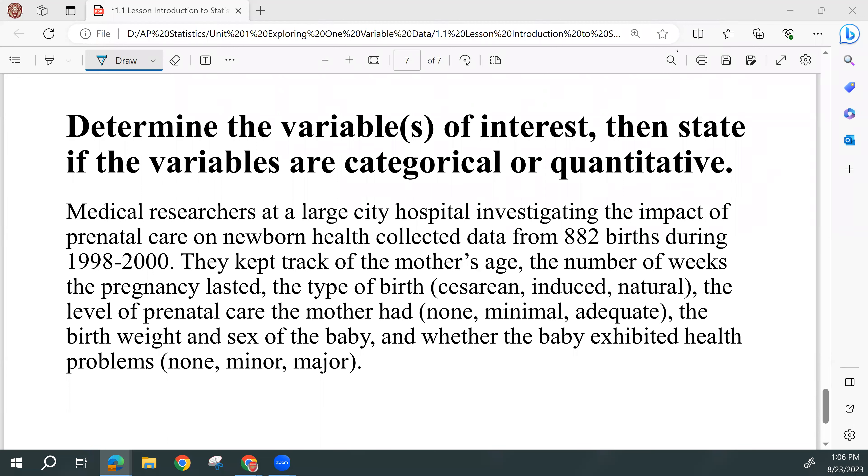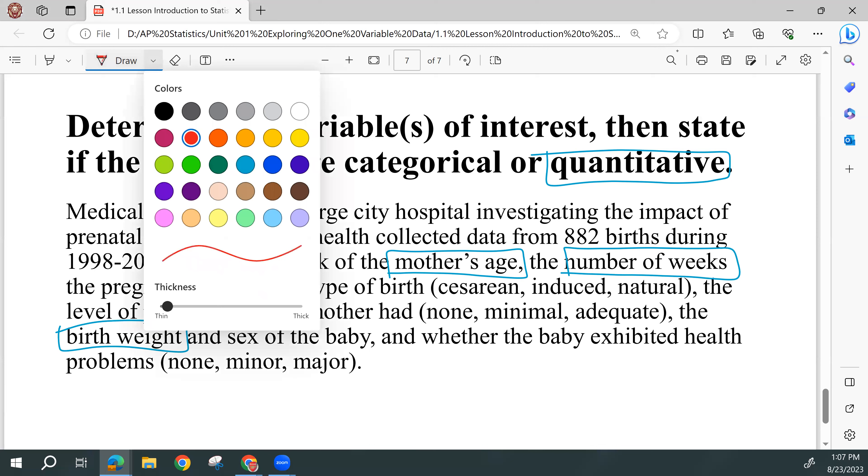So here we are looking at some medical data from 882 births. And so I will use my blue for quantitative one more time. Again, we're looking for things with units. And so the mother's age would be quantitative in years. Number of weeks would be quantitative. Birth weight. If I didn't miss any, the rest are categorical.